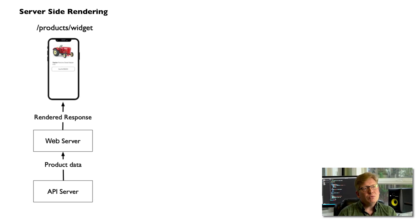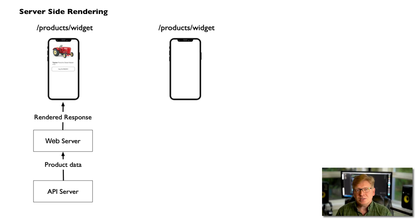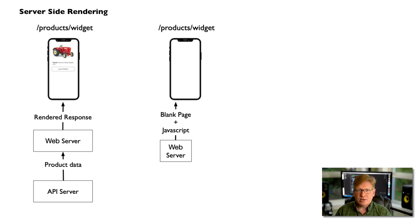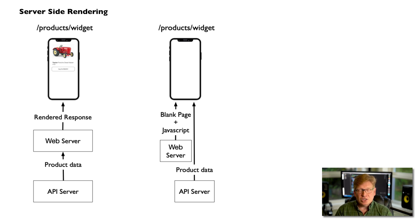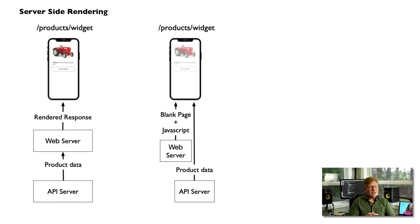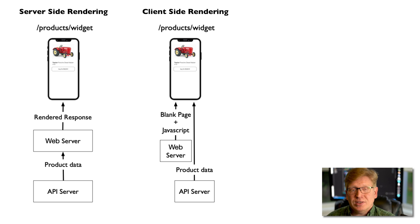Over the past ten years, we've been moving more towards client-side rendering. In that model, the user makes the same request to the server, but the server responds with essentially a blank page and a reference to a JavaScript application. That JavaScript then makes the request to the API, which responds with data. The client code — that JavaScript — then formats that data and renders it into the experience on the client. That's why we call it client-side rendering.